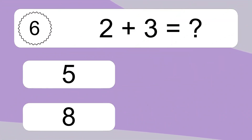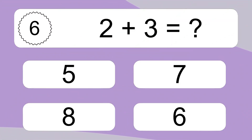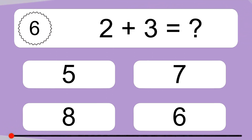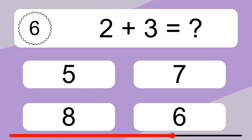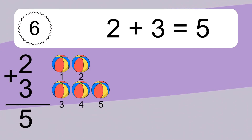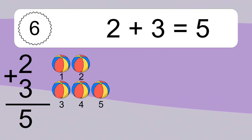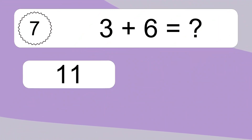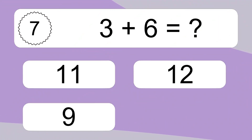2 plus 3 equals what? 2 plus 3 equals 5. Let's count it: 1, 2, 3, 4, 5.